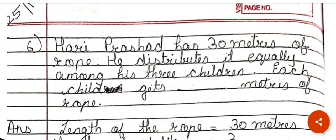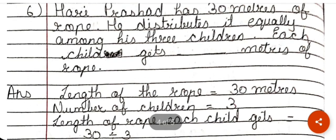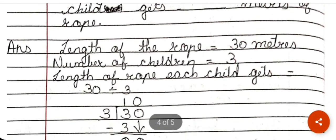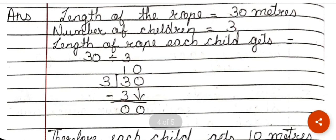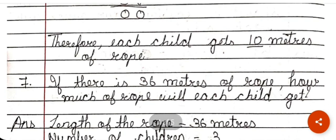Harry Prasad has 30 meters of rope and distributes it equally among his 3 friends. How many meters does each child get? Length of rope is 30 meters, number of children is 3. So we calculate 30 divided by 3, which gives 10. Therefore, each child gets 10 meters of rope.